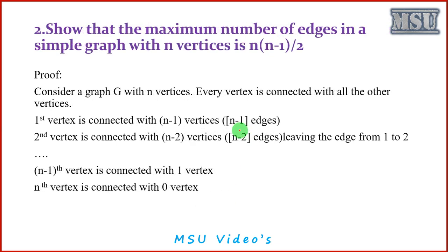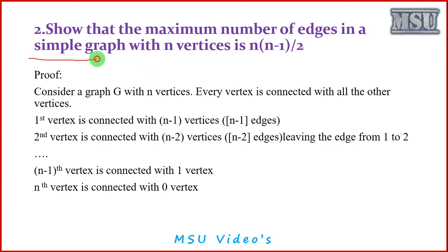We will move to the next theorem: the maximum number of edges in a simple graph with n vertices is n(n-1)/2. This is otherwise called the handshaking theorem. We are going to consider the maximum number of edges in a simple graph — a graph without self-loops and without parallel edges — which is what we call a simple graph.